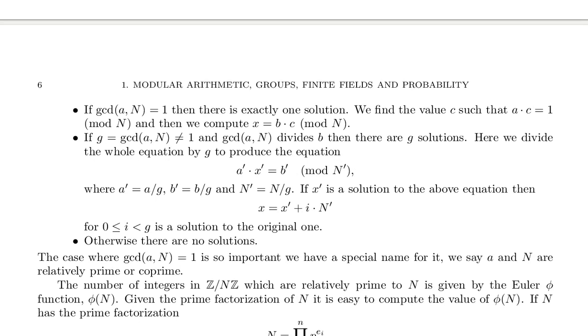If the greatest common divisor, GCD, of a comma n equals 1, you know that's when they're relatively prime, then there is exactly one solution. We find the value c such that a times c equals 1 mod n. And then we compute x equals b times c mod n.